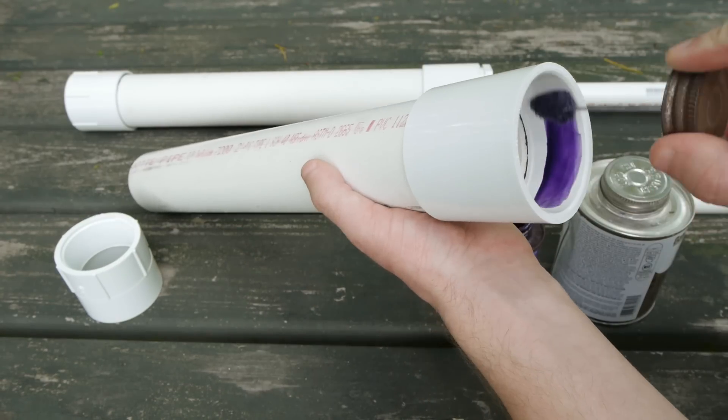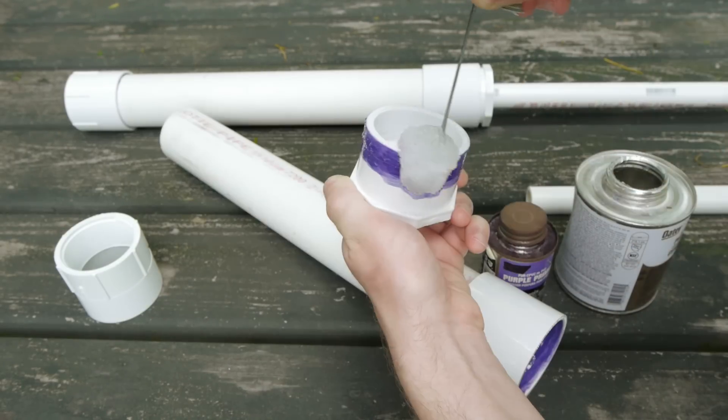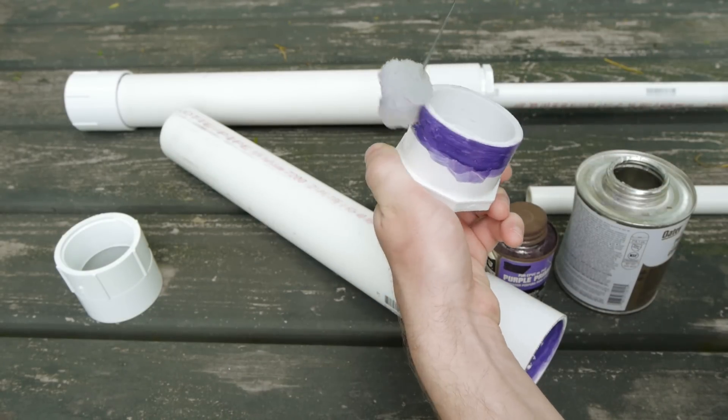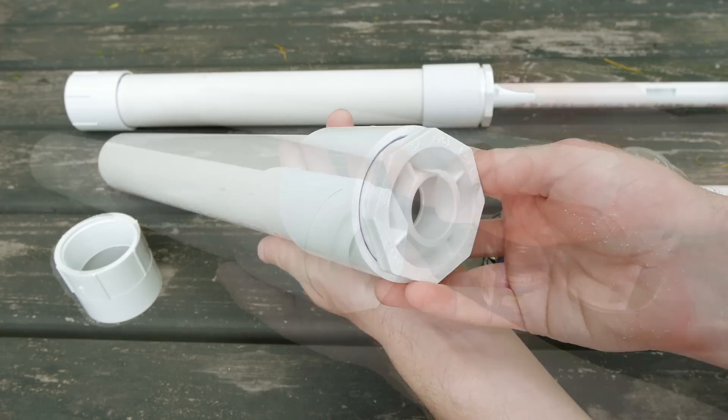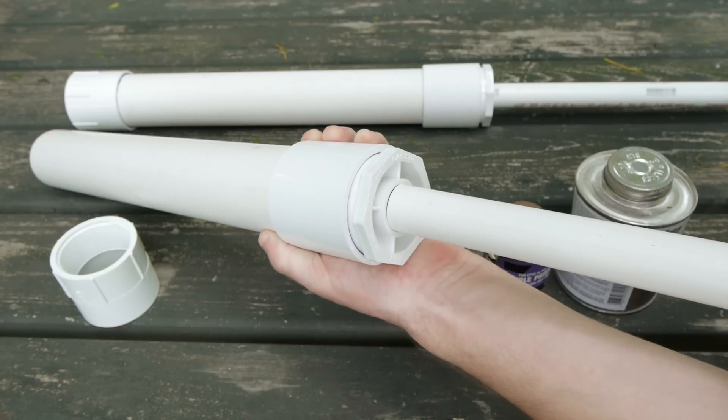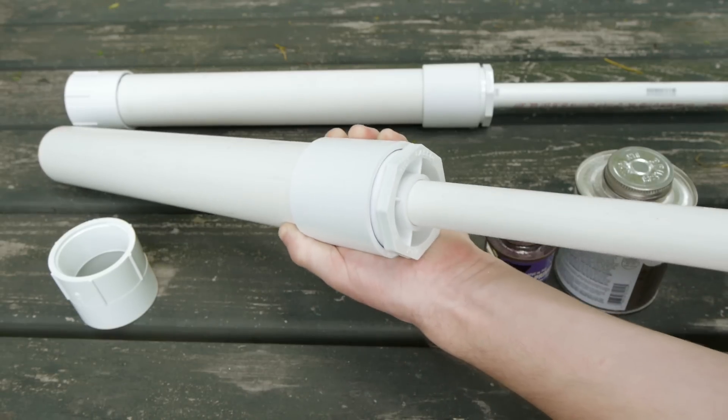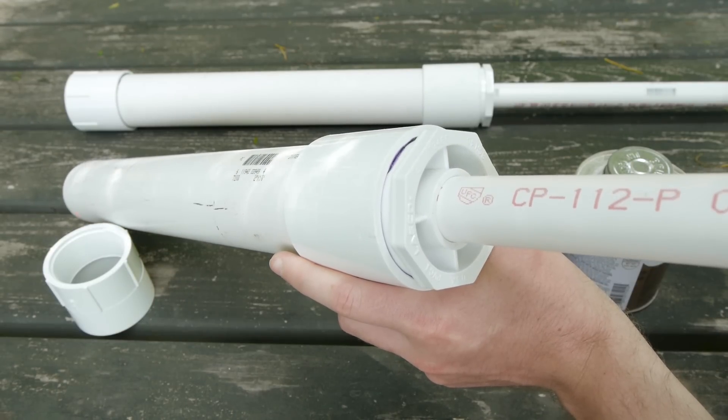This method of first primer, then cement, will be used to attach every glued fitting in this project, and next to go into the open end of the coupling is a 2 inch to 3 quarter reducer. Once it's held securely, into the reducer can be inserted a 1 foot length of 3 quarter inch pipe for the barrel. It too can be glued in, but I found mine was a tight enough fit that glue wasn't necessary.